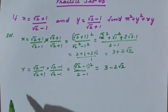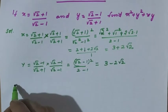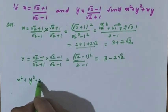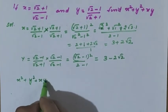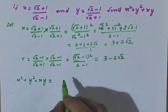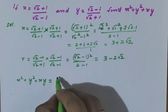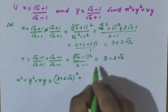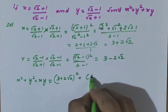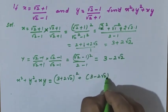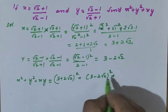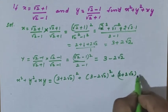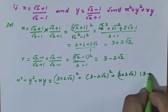Now what is to be found? x squared plus y squared plus xy. x squared is 3 plus 2 root 2 whole square, y squared is 3 minus 2 root 2 whole square, and xy is 3 plus 2 root 2 into 3 minus 2 root 2.